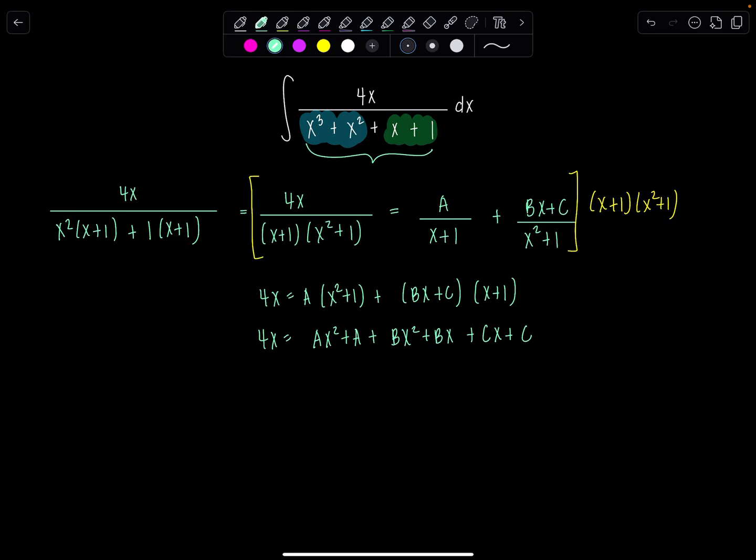And then to solve for a, b, and c, we need to group the coefficients of our like terms together and set them equal to each other. So starting with x squared, I don't see any x squareds on the left-hand side. So 0 has to equal a plus b. Then moving down x to the first, I have a 4x to the first. So 4 has to equal b plus c.